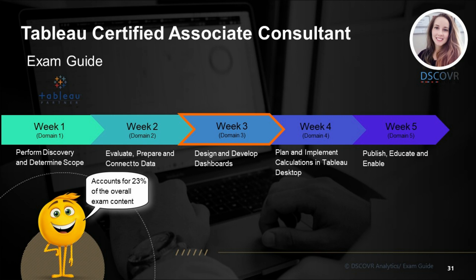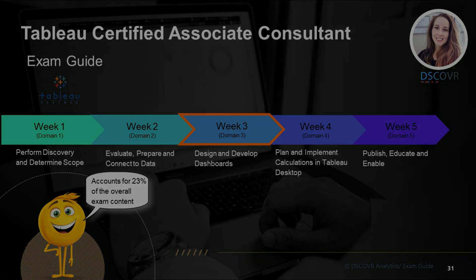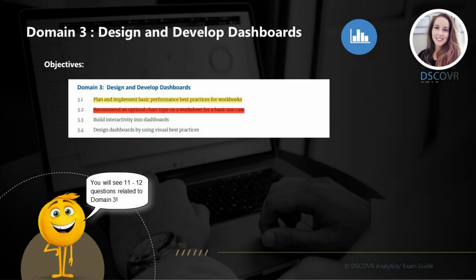All right, let's take a closer look at different subsections that are covered in this domain. For subsection 3.1, you need to know what are some of the things that can impact performance in a workbook. So you need to think about performance best practices with respect to calculations, data sources, worksheets, and dashboards.